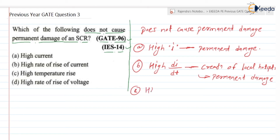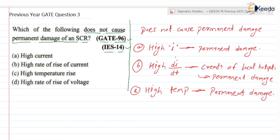The third option is high temperature rise. If the temperature of the device is high — which happens due to high current or high power loss — there is a possibility of permanent damage of the device. This is similar to the effect of high current.